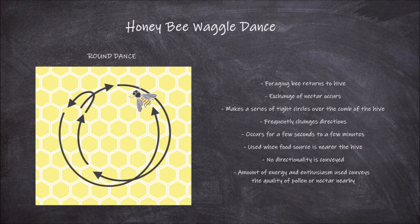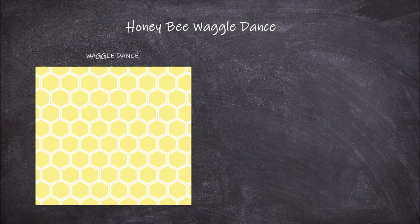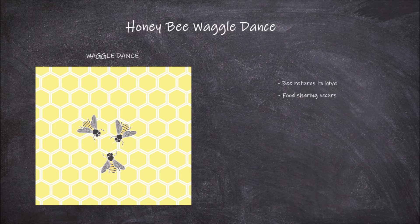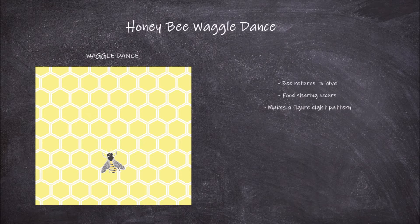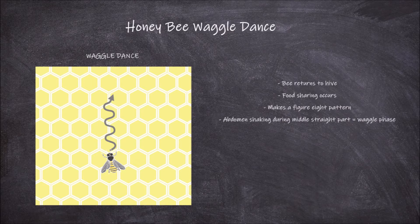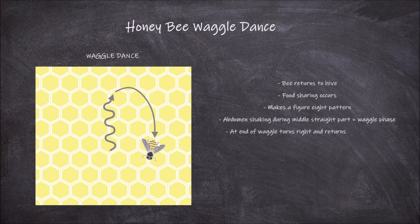The second type of dance is called the waggle dance. During this kind of dance the bee returns to the hive and food sharing occurs between the returning bee and the bees at the hive. The bee will then engage in a figure eight pattern. This pattern includes a period of abdomen shaking in the middle straight part of the figure eight. This is the waggle phase of the waggle dance. At the end of the waggle phase the bee turns to the right and returns back to the beginning point of the waggle portion.